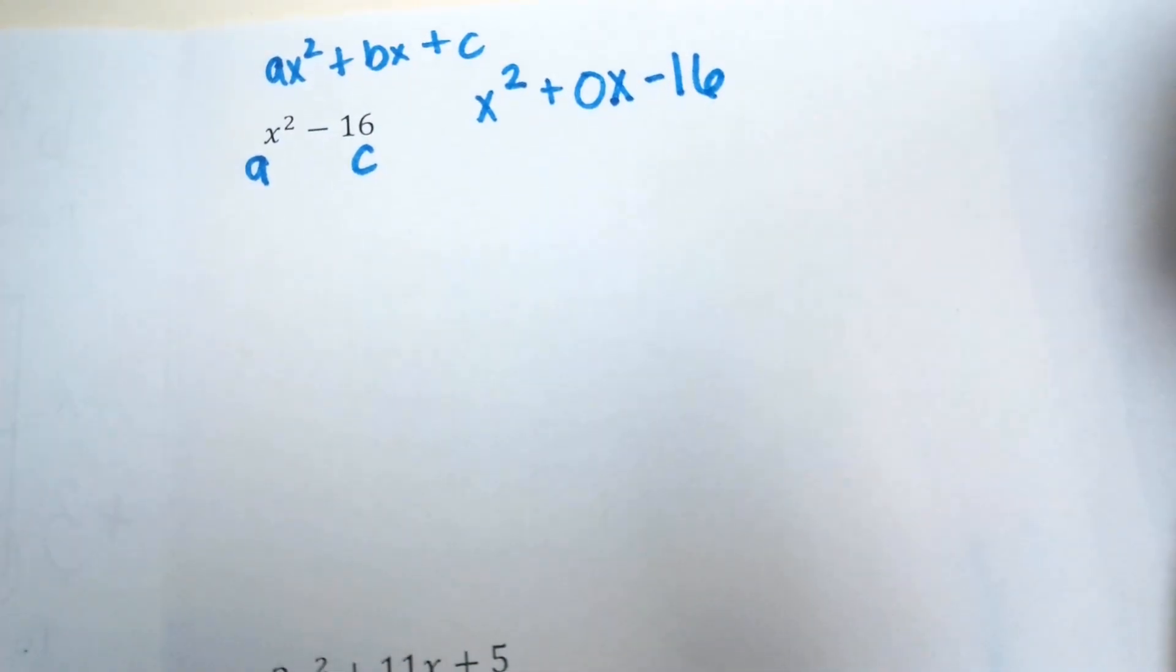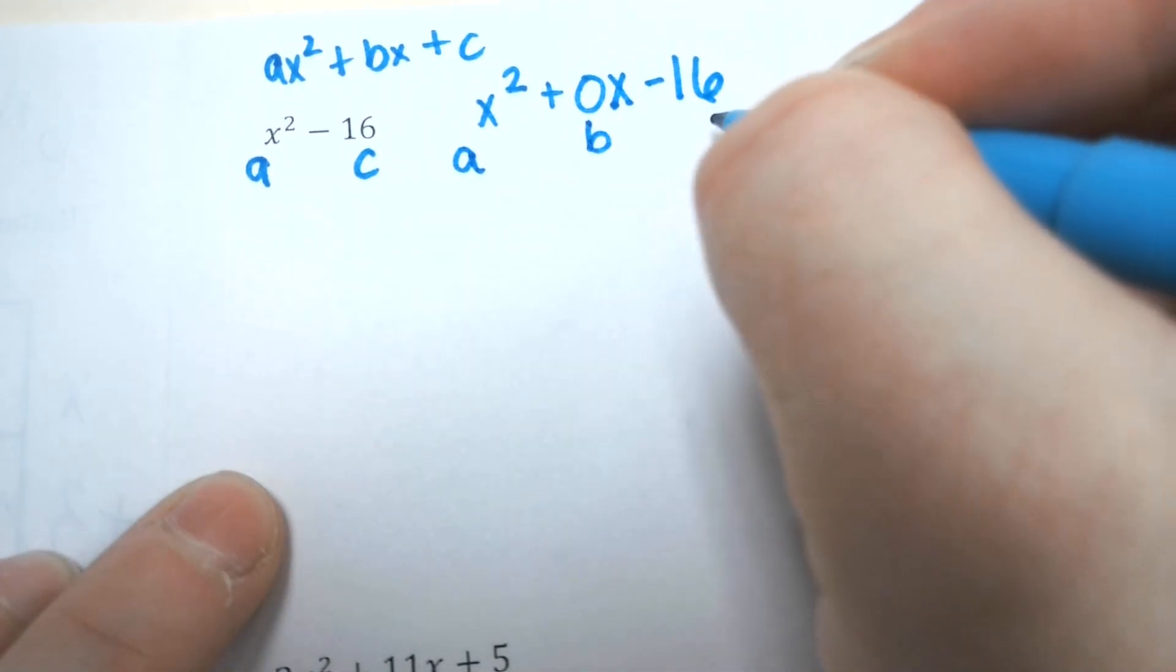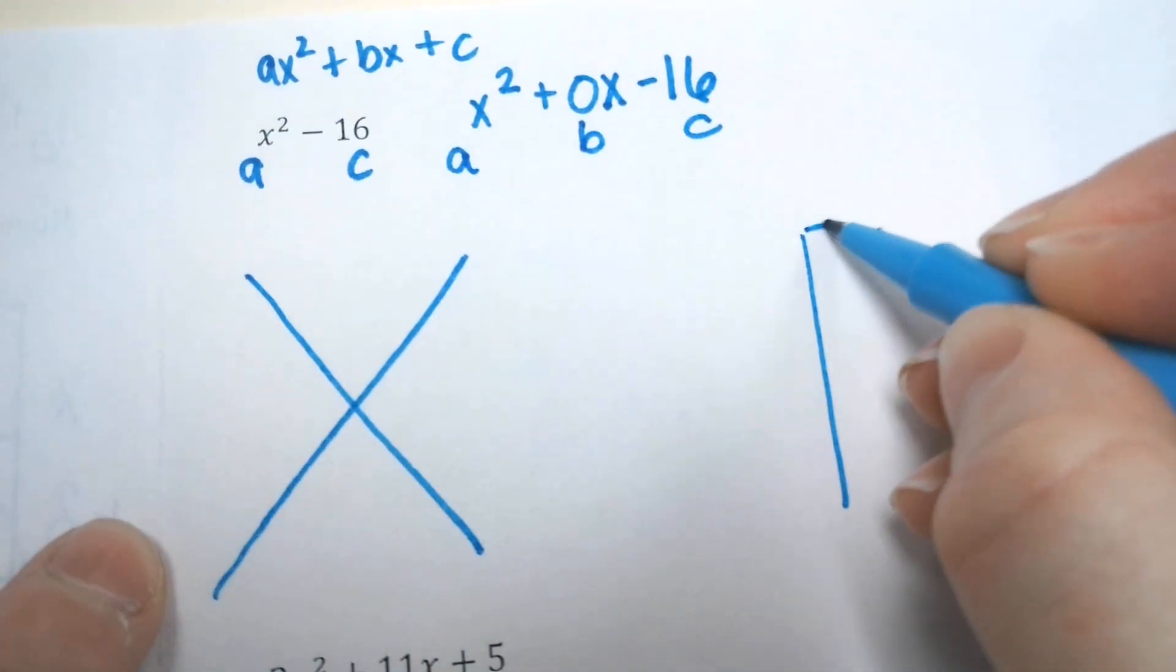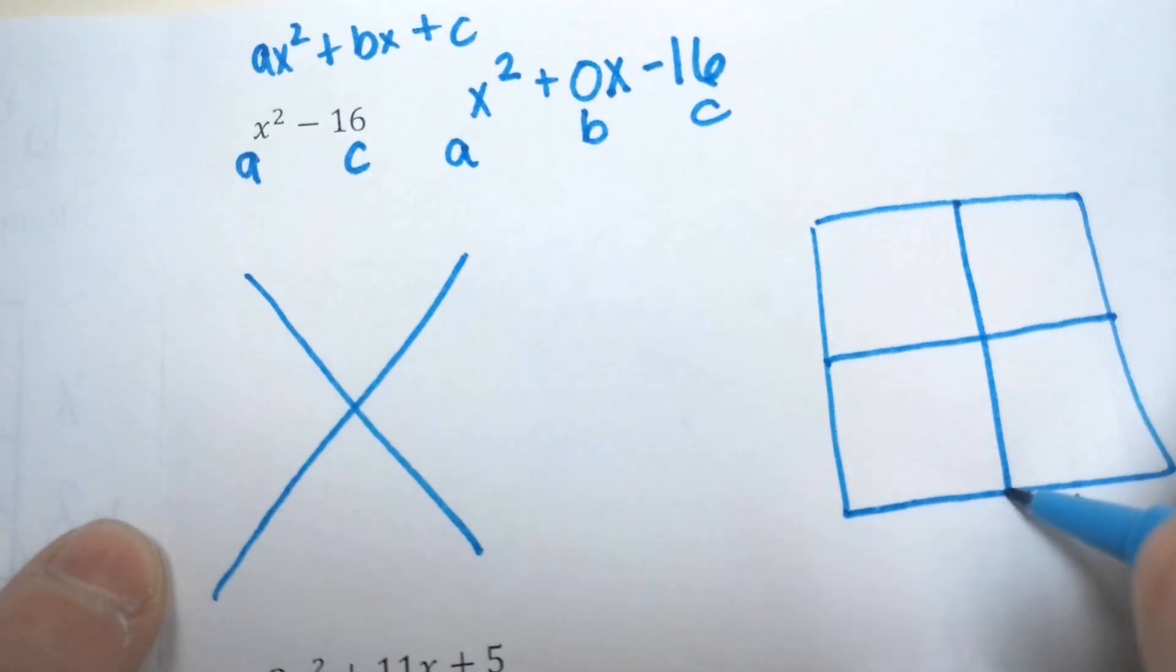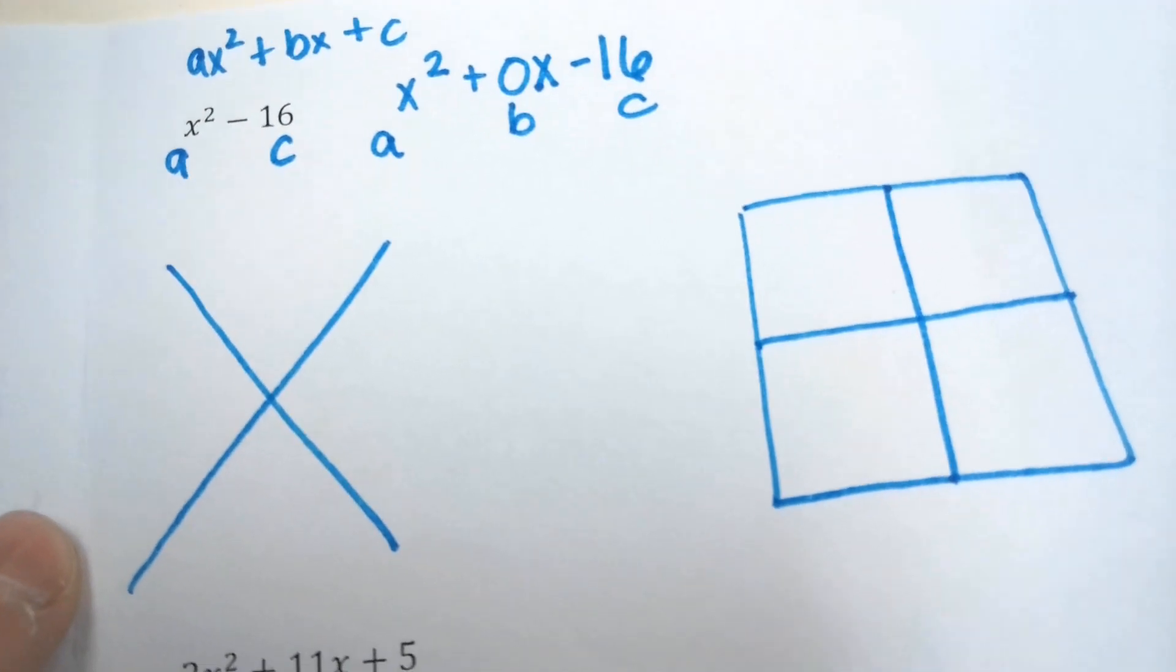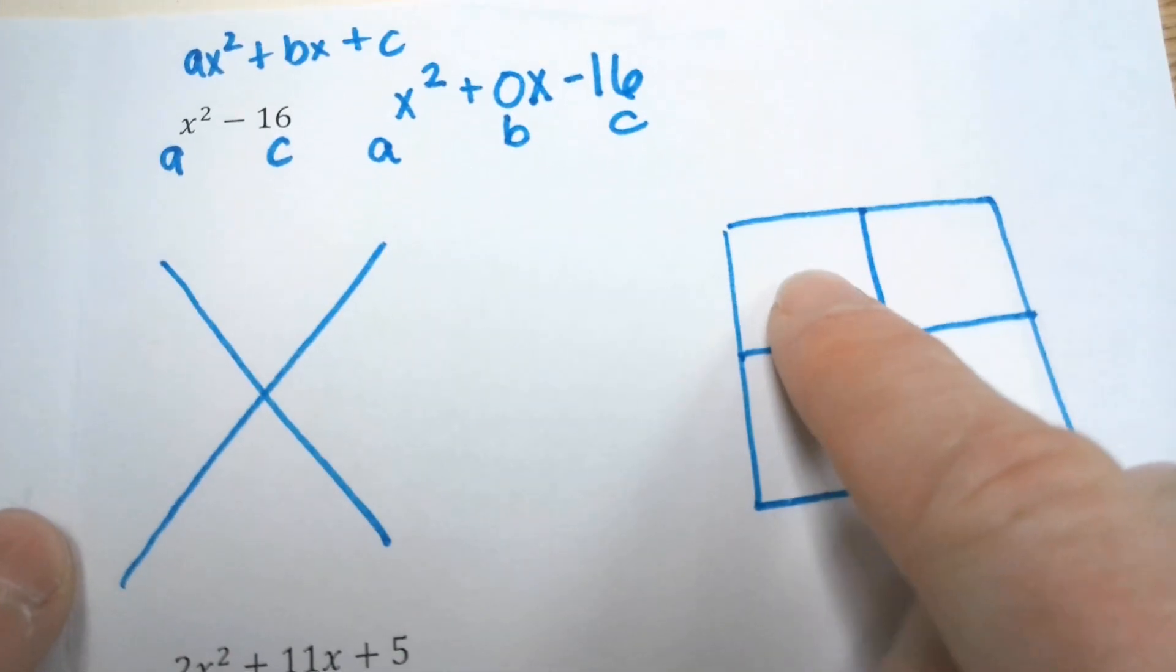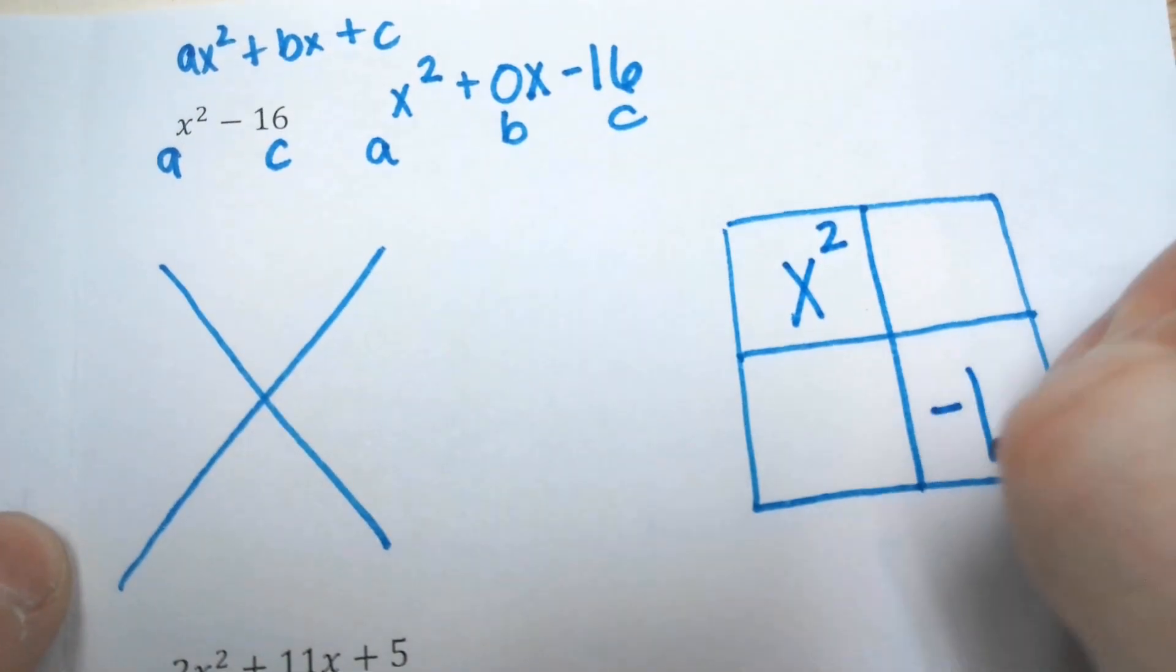Because I need to have an A, B, and C so I can do the X box. If there is no Bx, then it's a 0x. So this is A, this is B, this is C. Draw your X, draw your box. After you draw your box, go ahead and put your first term here, it's just x². And your last term in the bottom right.